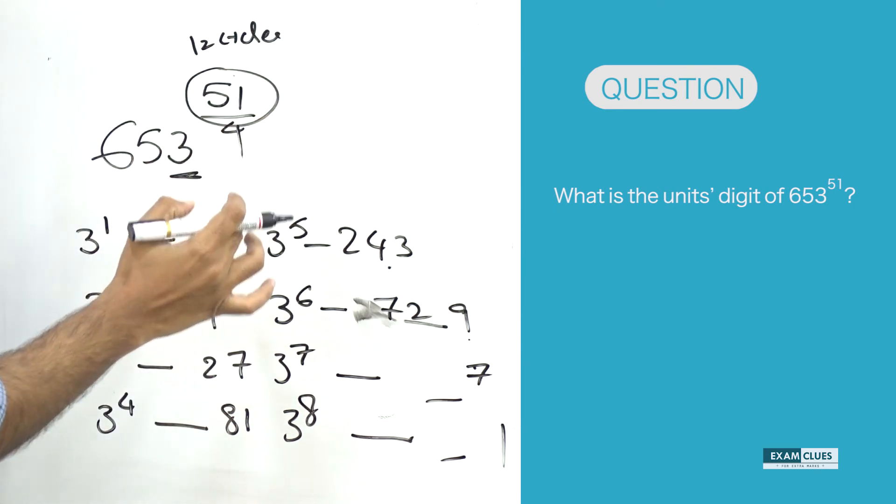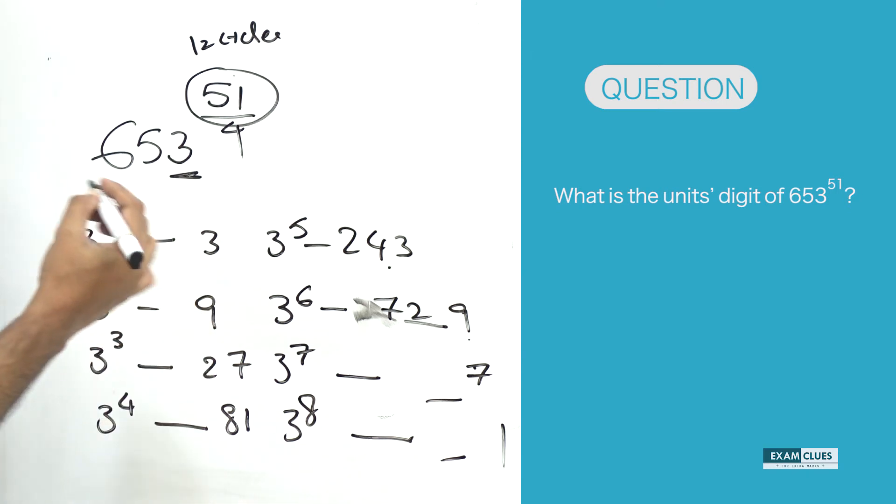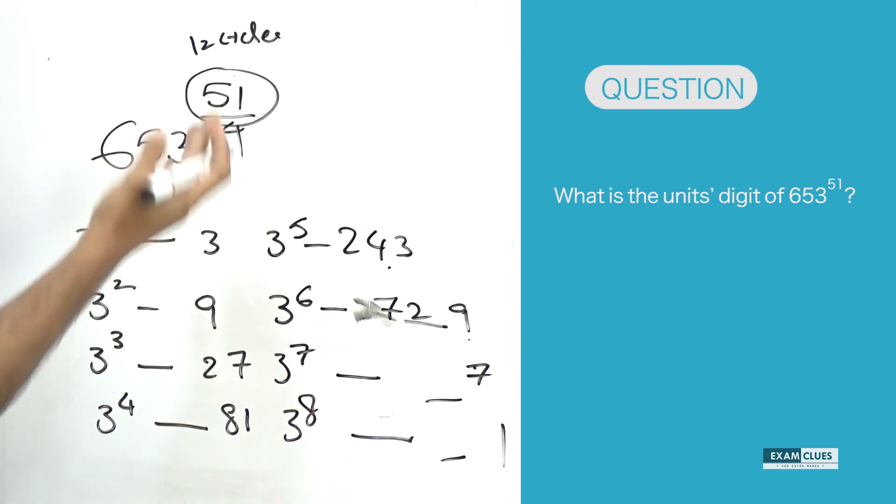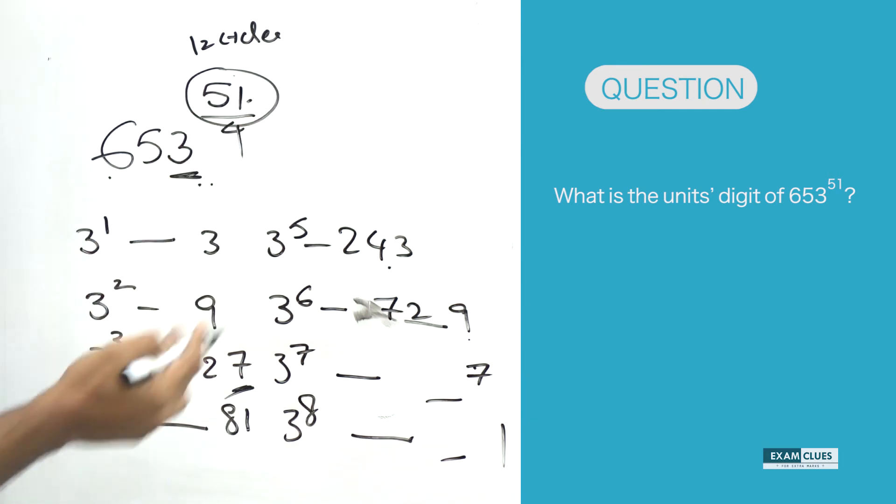So if you divide it by 4, 12 cycles are finished. So 48 is finished and the remaining part is 3, or the remainder is 3. So we just need to worry about what would be the last digit when 653 is cubed. Because as I said, 12 cycles got finished, so the next cycle is having only up to 3. So it will simply end with 7. Therefore, the last digit of 653^51 is 7.